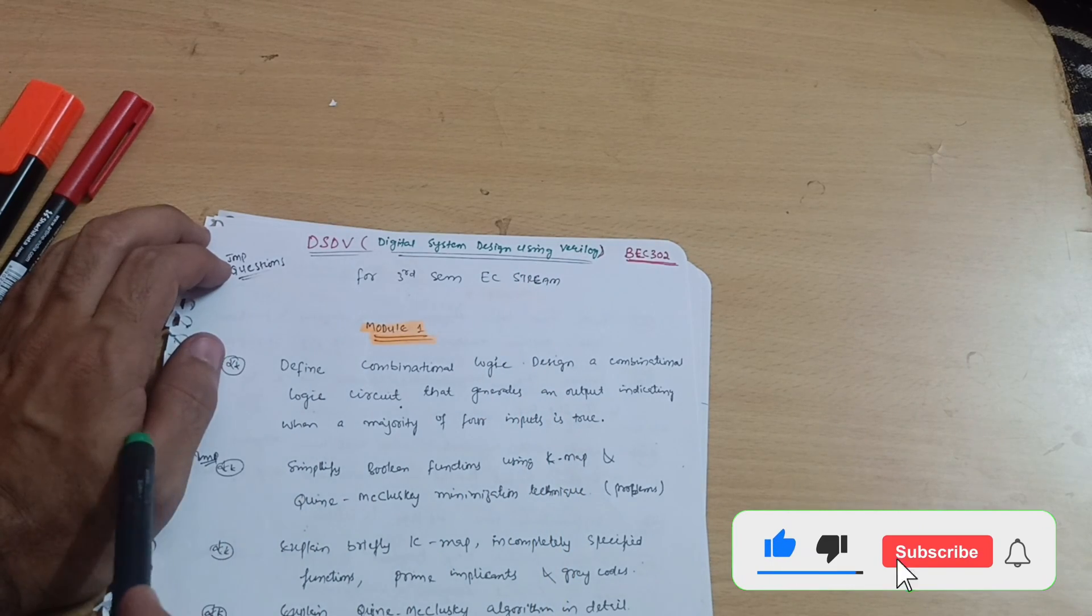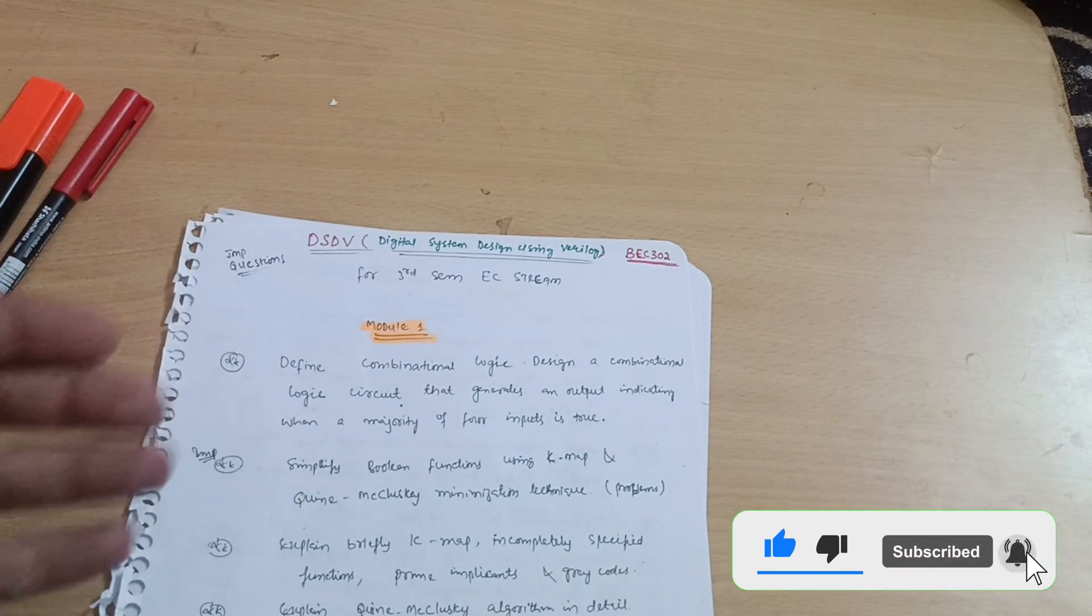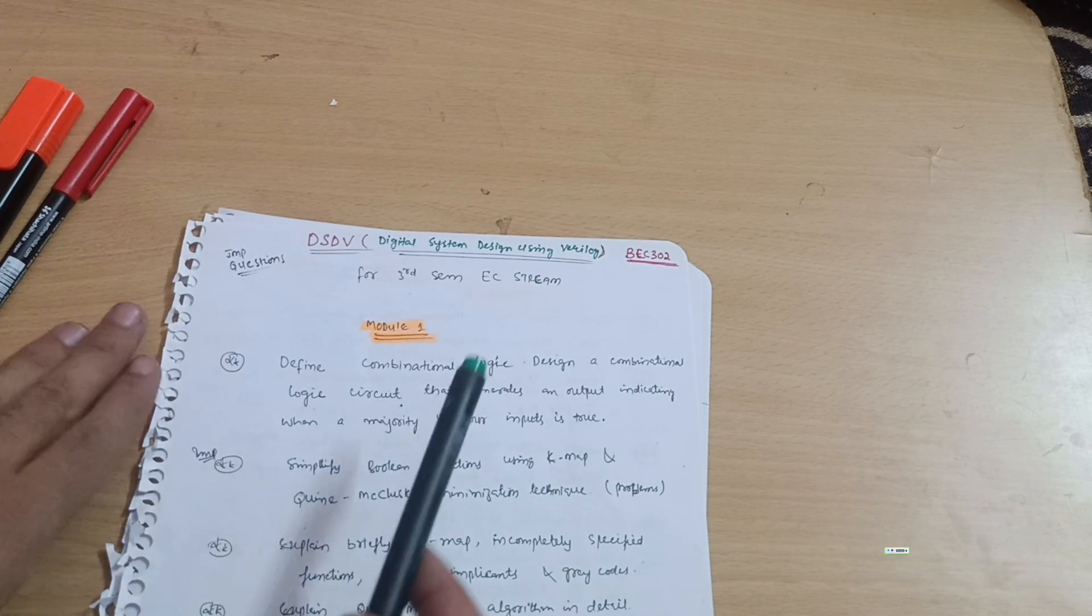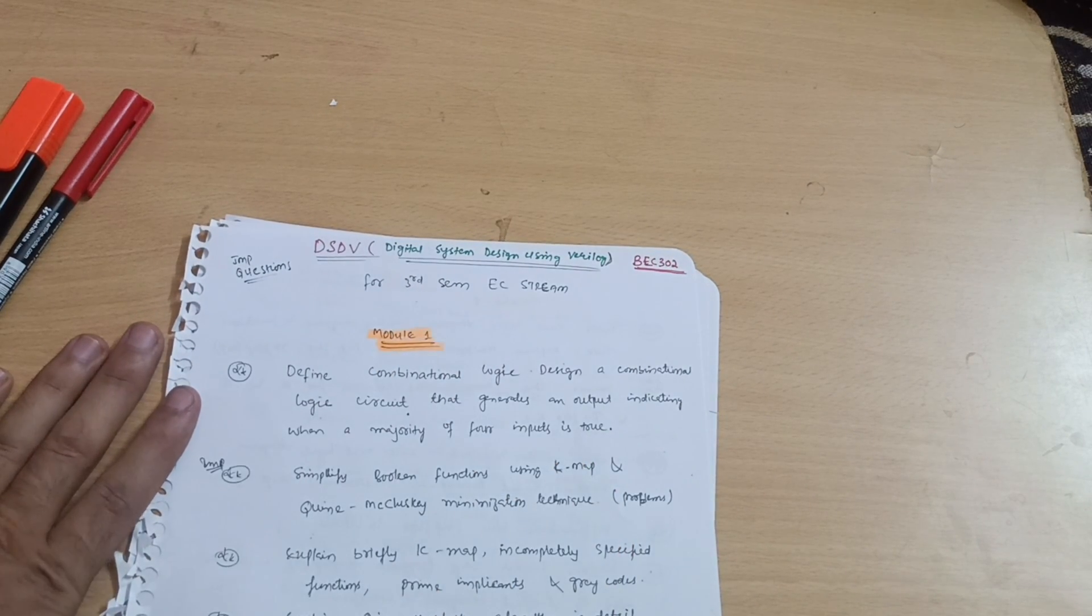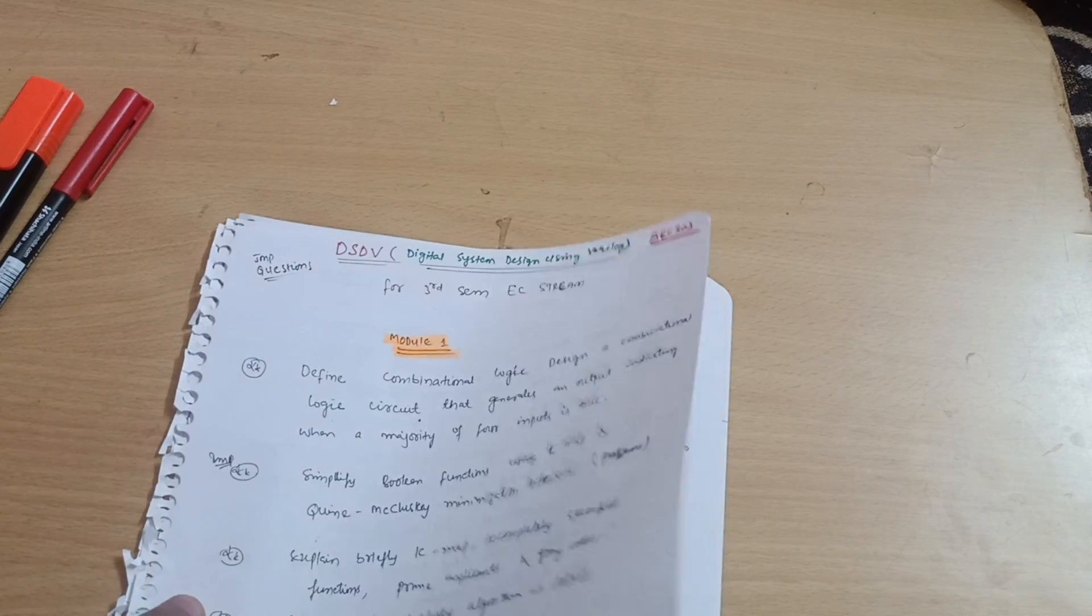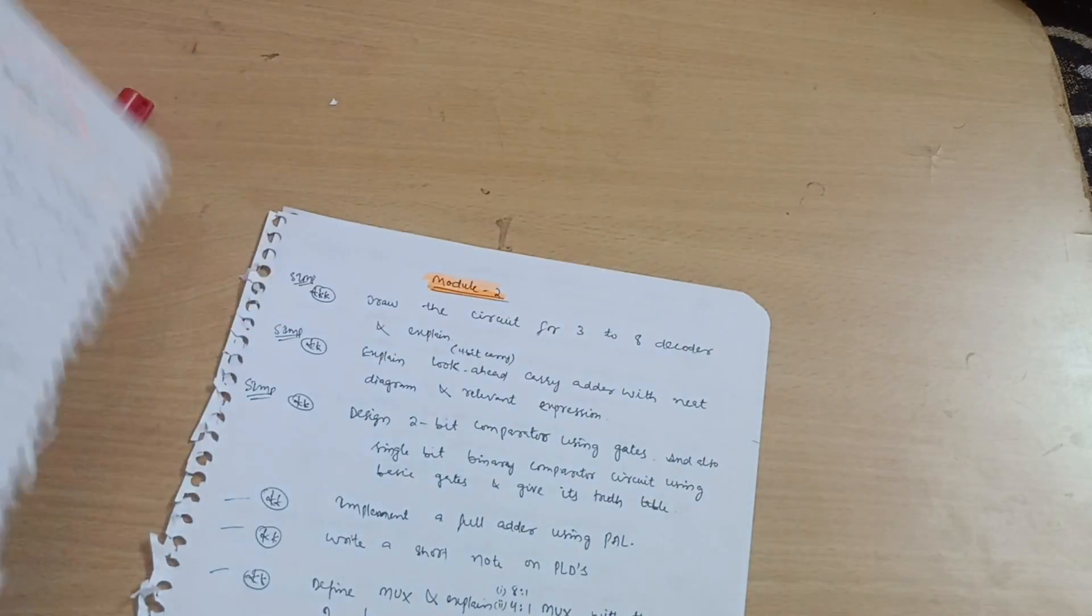Today I am with another subject: Digital System Design using Verilog. The link is in the description. You can watch those passing package videos which will definitely help you in the examination. Let's start with the DSDV subject. Your subject code is BEC302. Let me discuss first the passing modules.